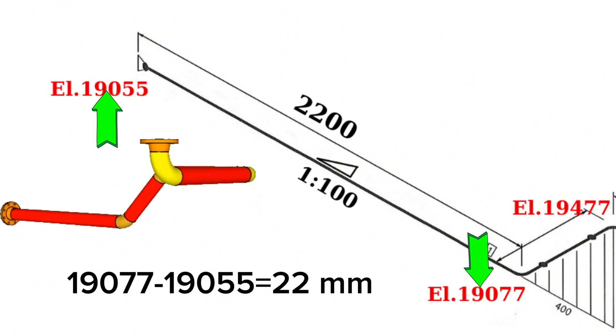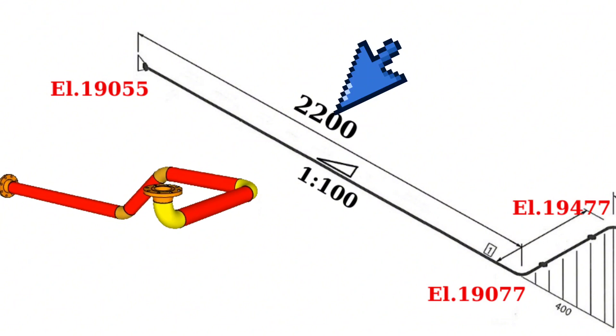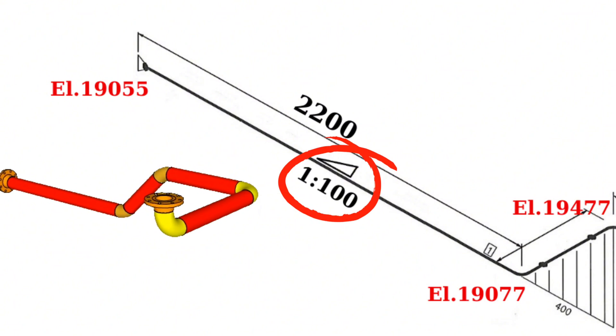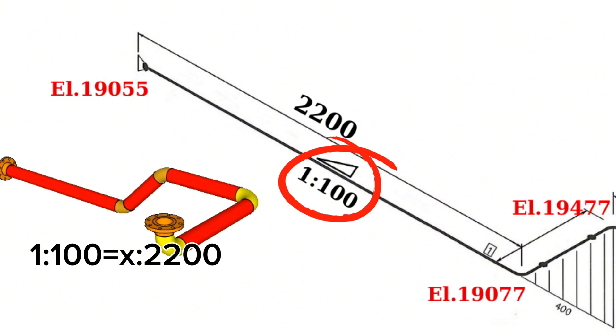Let's calculate with slope ratio now. In this pipe isometric drawing, the slope at a horizontal distance of 2200 is expressed as a ratio of 1 to 100. 1 to 100 ratio equals x to 2200 ratio.